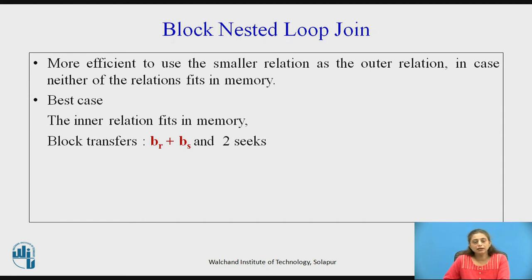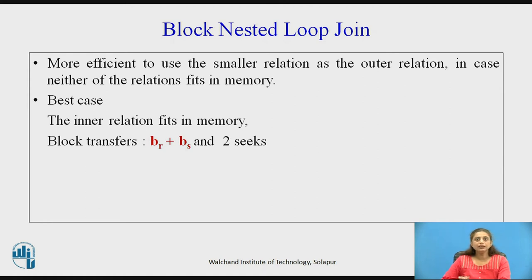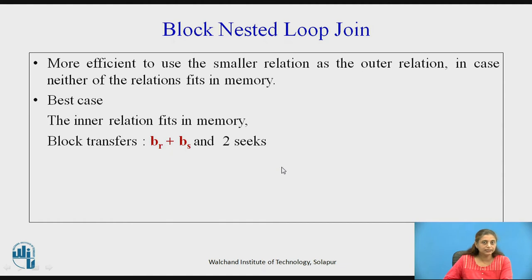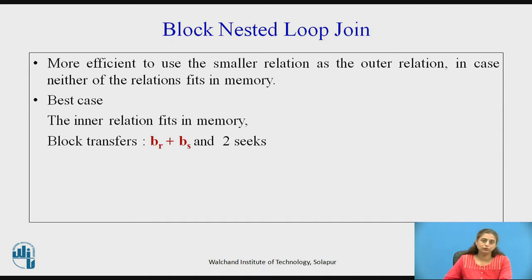For the best case, if one relation fits in main memory, it is better to use the smaller relation as the outer relation. If the inner relation fits in main memory, it will be read only once, so block transfers will be BR + BS and 2 seek operations — the same as nested loop join.